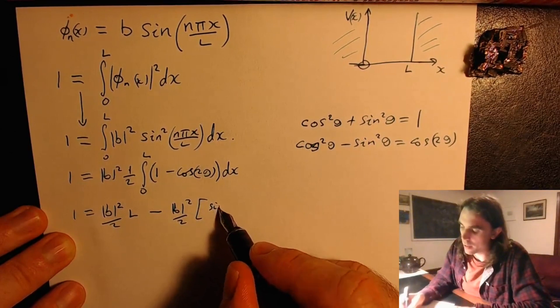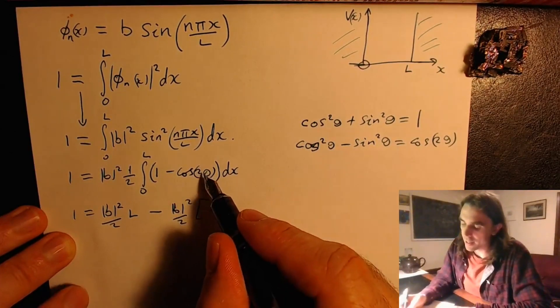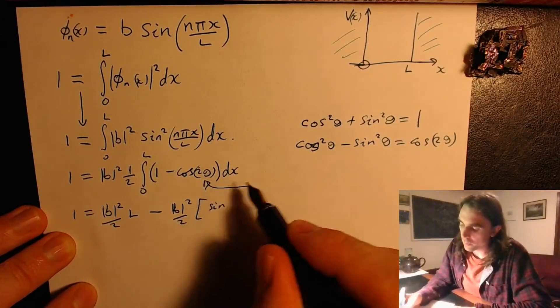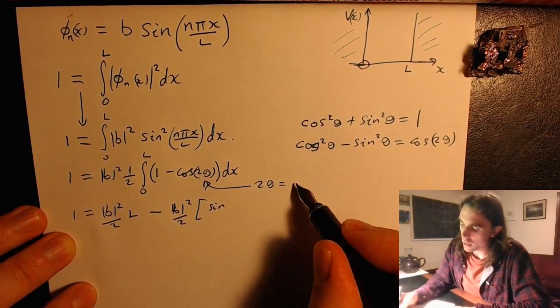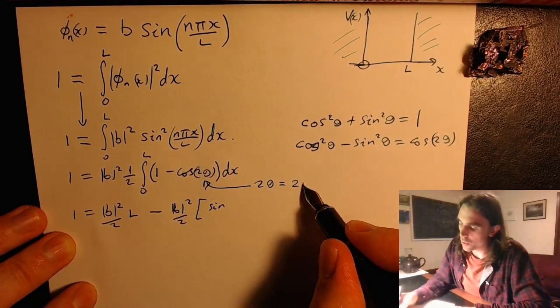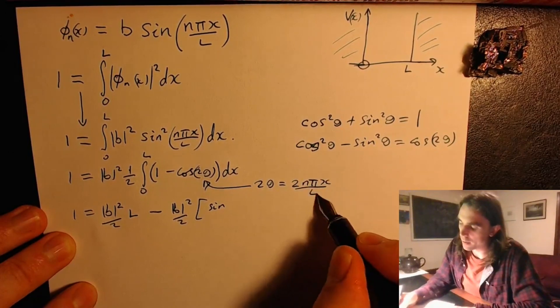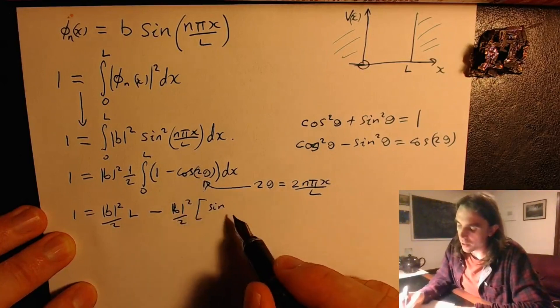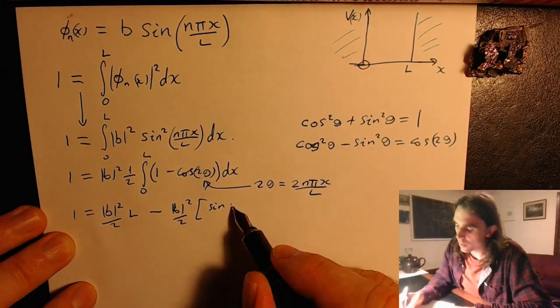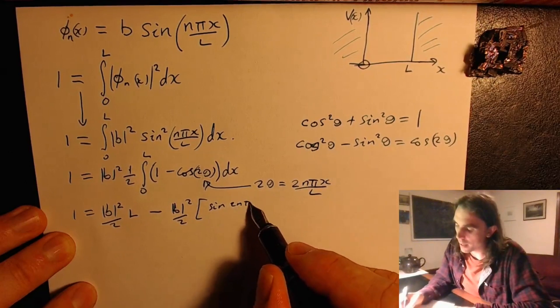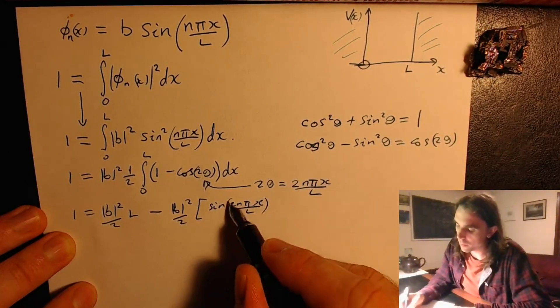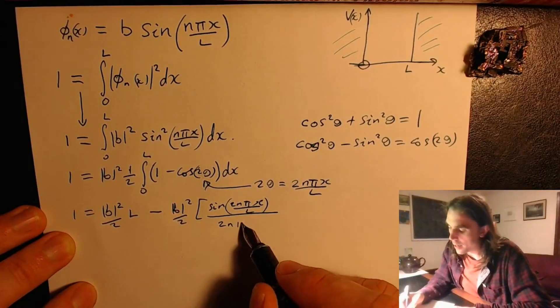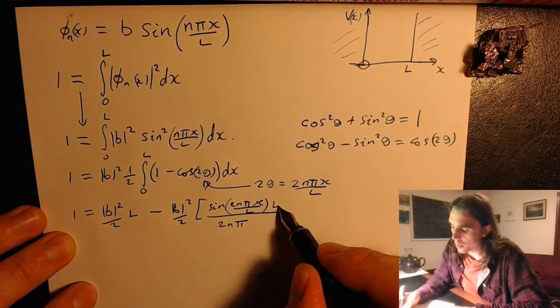Sorry I've put the theta here, so 2 theta is equal to 2n pi x over l. So this is going to integrate to sin 2 theta, which is sin of 2n pi x over l, and we'll need to divide by 2n pi multiplied by l.